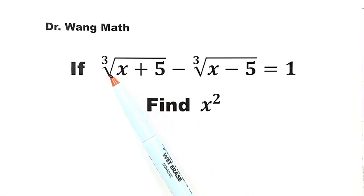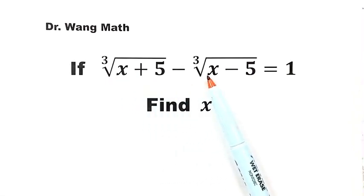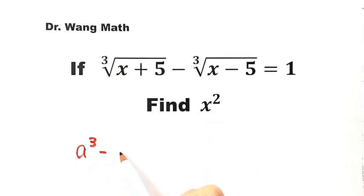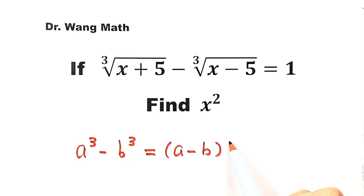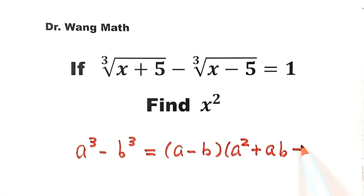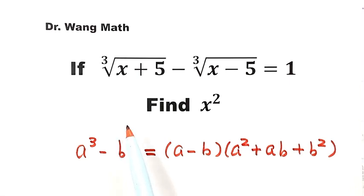Since we're given a cube root minus a cube root, we're going to start from this formula: a³ minus b³ equals (a minus b) times (a² plus ab plus b²).